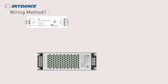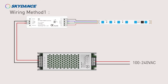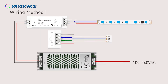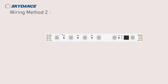Wiring. Wiring method 1 and wiring method 2: if the current of the SBI pixel strip exceeds 8A, the SBI pixel strip must be powered independently.